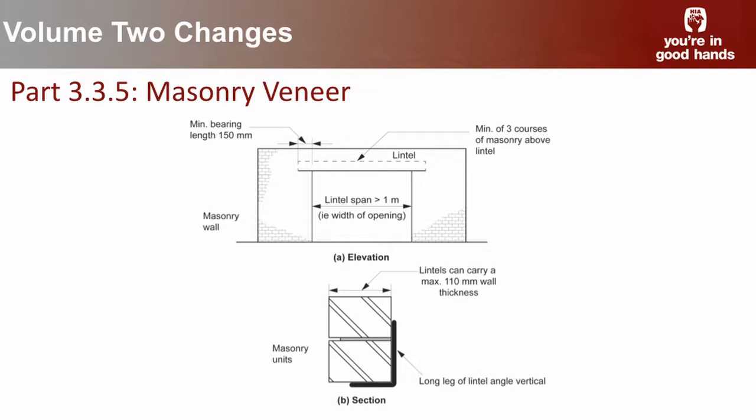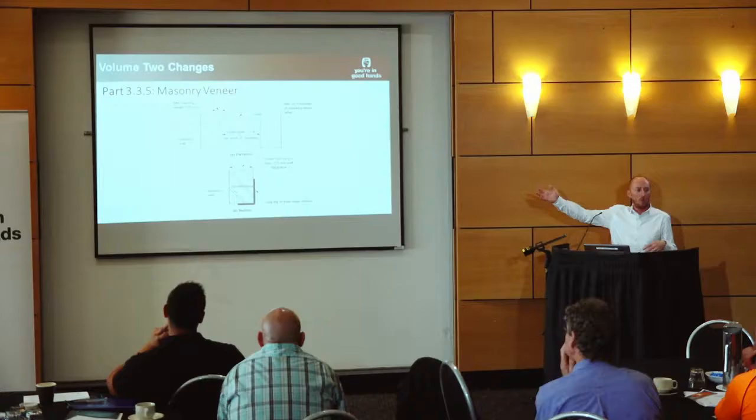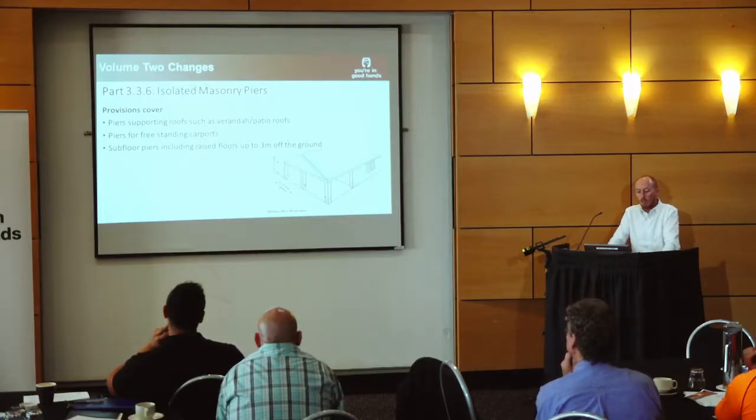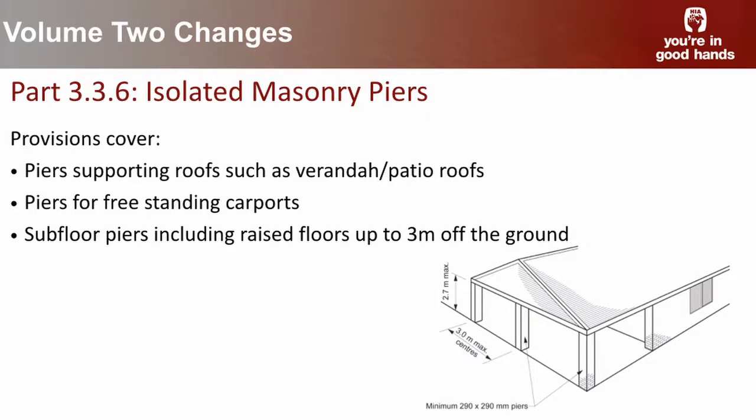A couple of figures have been incorporated that everyone would know well — the kind that were in Cert IV training material many years ago and are very useful to have available. A new part has also been incorporated for isolated masonry piers, covering requirements for piers supporting roofs such as veranda roofs and patios, freestanding carports, and subfloor piers including raised floors up to three metres off the ground. There are also some provisions for engaged piers.